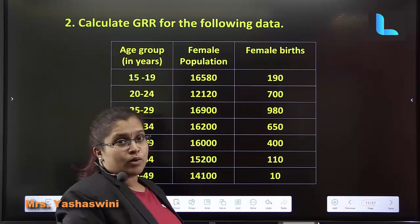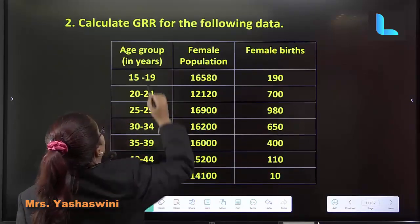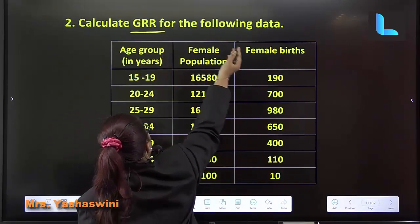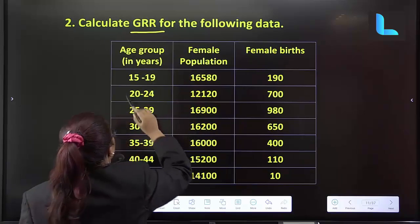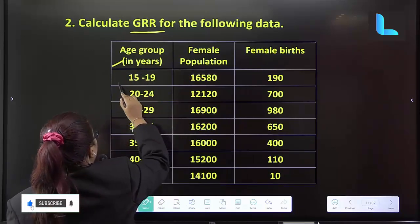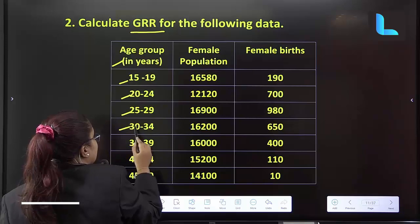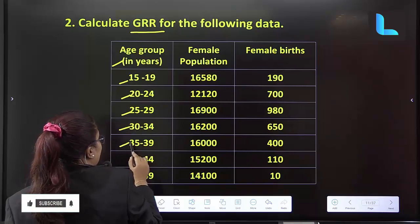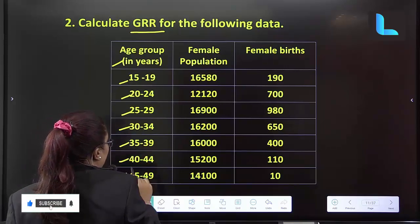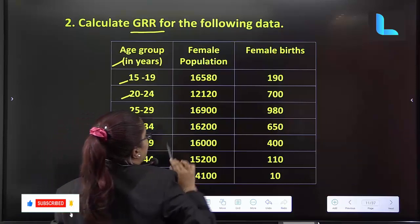Next, second problem: GRR. Calculate GRR for the following. The age groups given are: 15 to 19, 20 to 24, 25 to 29, 30 to 34, 35 to 39, 40 to 44, and 45 to 49. This is the age group.